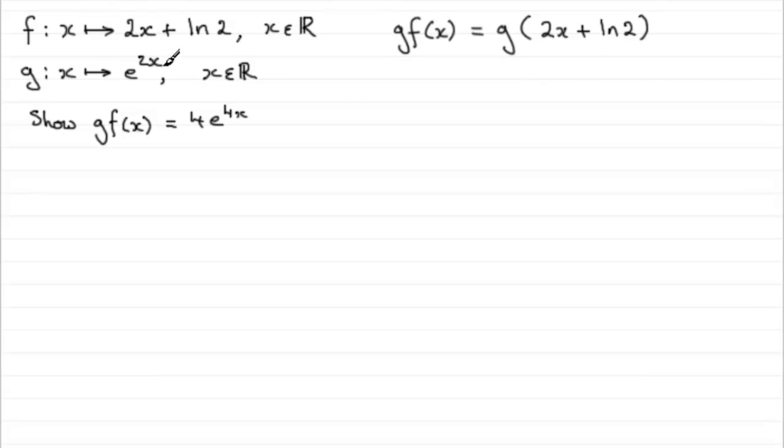So here we are, we're going to replace this x with 2x plus natural log of 2. So this would equal e to the power of 2 multiplied by our 2x plus natural log of 2.